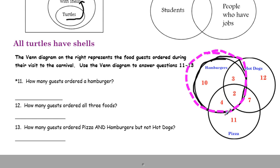Everybody in this hamburger circle right here ordered a hamburger. Yes, some of them ordered hot dogs and yes, some of them ordered pizza and some of them ordered all three, but we want to know how many ordered hamburgers and all of these people did. So, 10, 4, 2, and 3. 10 plus 4 is 14, plus 2 is 16, plus 3 is 19. So, 19 people ordered that hamburger.